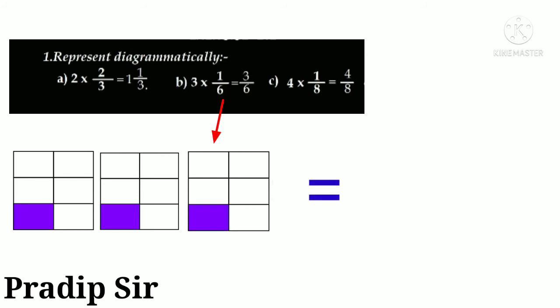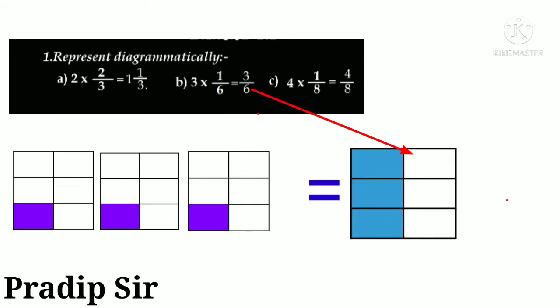And then we have 3/6. That means out of six parts, three parts are shaded. So there you see, a figure with six parts where three parts are shaded. Hope you understood.